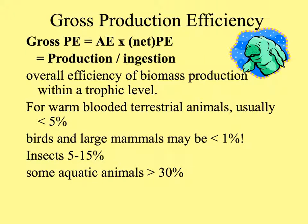Last of all, there's gross production efficiency, which looks at how much energy goes into new biomass over the amount originally ingested — rather than the net, which is over the amount assimilated. This is a measure of overall efficiency of biomass production within a trophic level. For warm-blooded terrestrial animals such as cows, cats, and dogs, this is usually less than 5%. Birds and large mammals can have gross production efficiency of less than 1%. For insects it's higher, and probably the highest is found in some aquatic animals like the manatee.